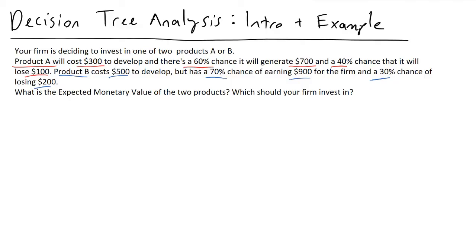The question is, what is the expected monetary value of these two products? That's a new term that we're going to calculate using our decision tree. Which product should we invest in? Because we're going to only have finite resources and we're going to want to maximize our return on investment for our shareholders.